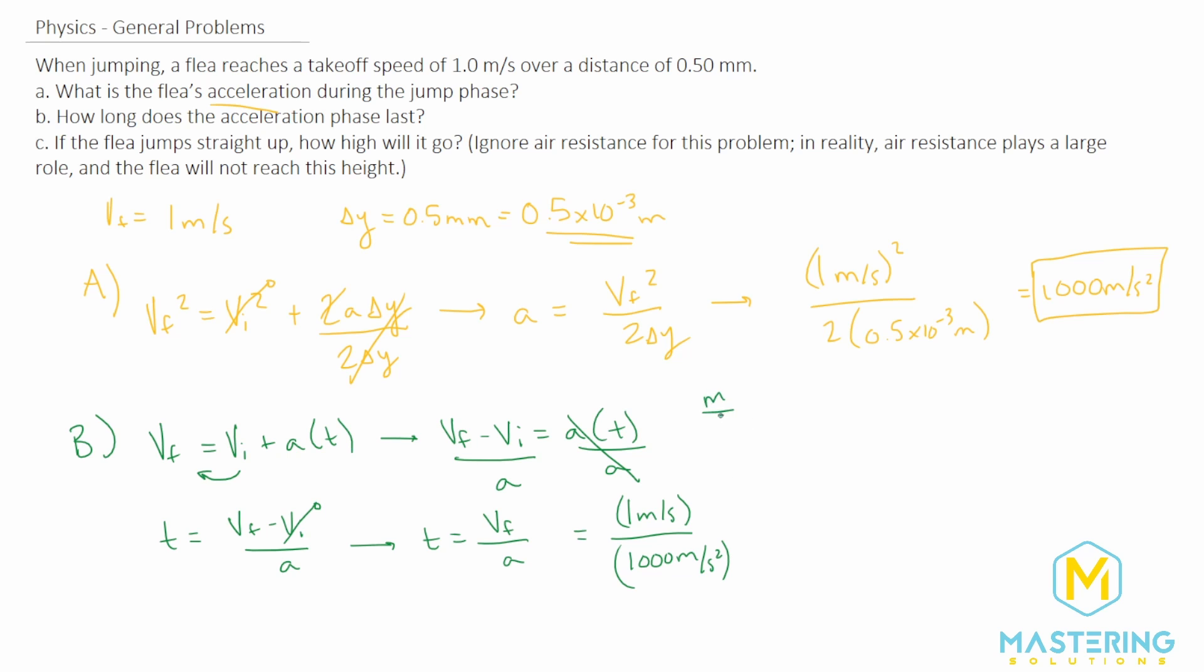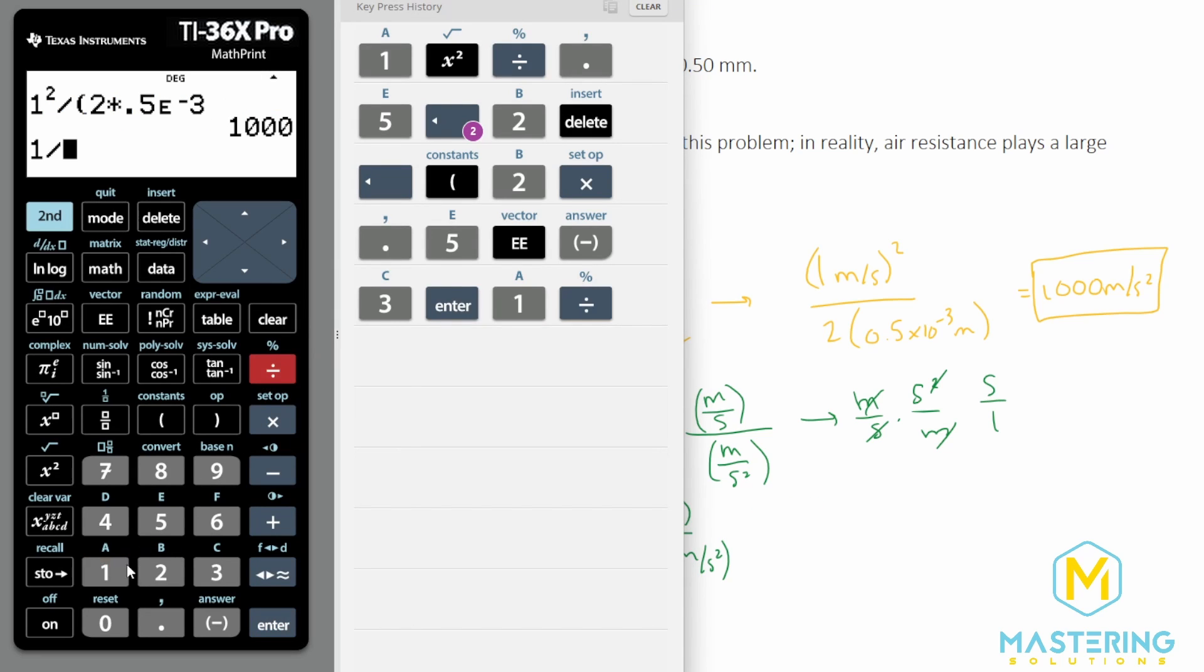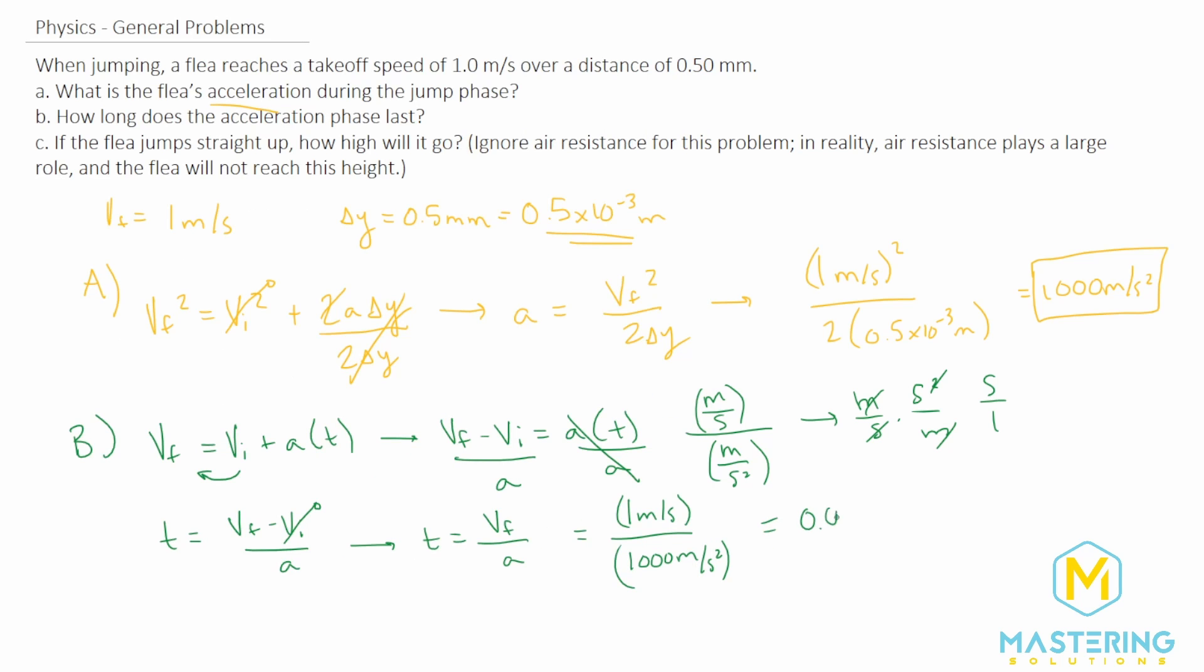When we have meters per second divided by meters per second squared, it is two fractions divided, which is the same thing as multiplying by the reciprocal. So that is the same thing as meters over second times seconds squared over meters. Now the meters will cancel, the seconds will cancel, and one of the seconds up here will cancel, leaving us with seconds over one, which is the standard units for time. It's a double check that we did our math correctly. So 1 divided by 1000 gives us 0.001 seconds, which is how long the acceleration phase lasts.